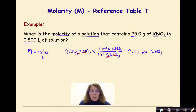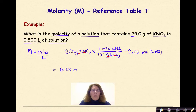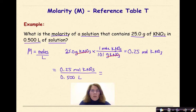So now we have moles. We have to go on and find molarity. We know molarity is equal to moles over liters. The number of moles we found was 0.25 moles of KNO3, and they gave us liters — 0.500 liters of solution. So when we divide 0.25 by 0.5, our answer will be 0.5 molar KNO3.